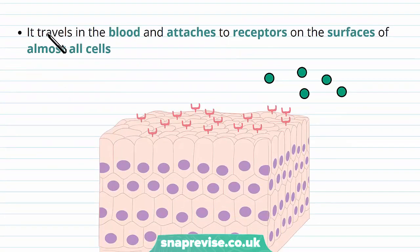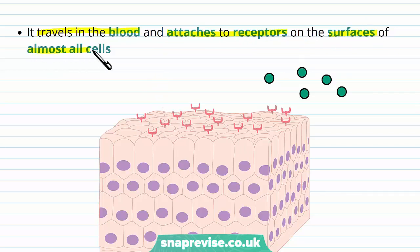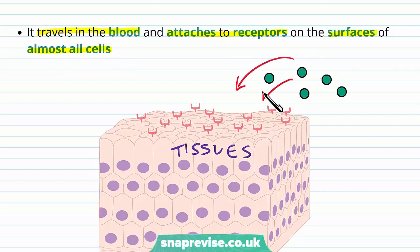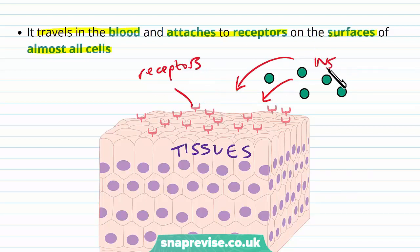When insulin is released from the beta cells, it travels in the blood, as all hormones do in the endocrine system, to the surface membrane of almost all cells in the body. So for most tissues, they can respond to the insulin traveling in the blood, leaving the blood to bind to receptors on these cells. The receptors will be specific and complementary to the insulin hormone.